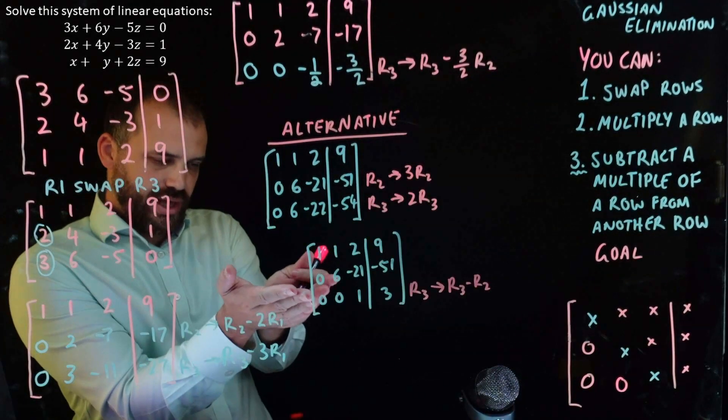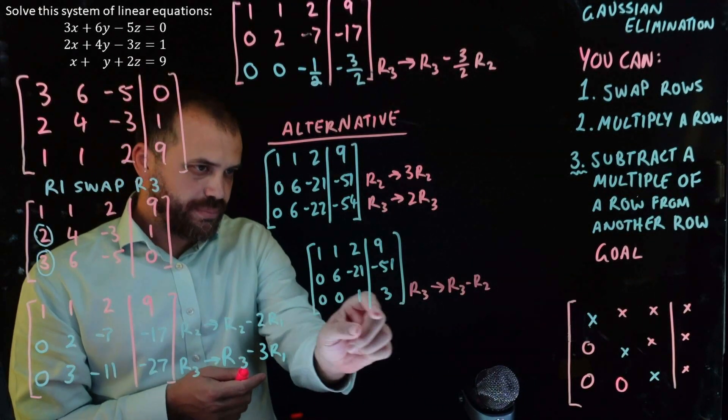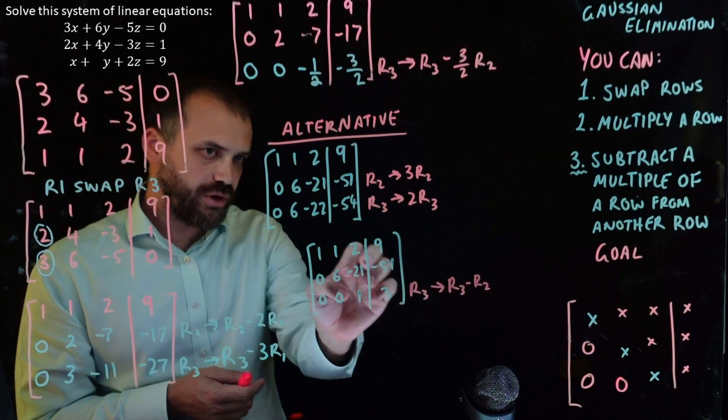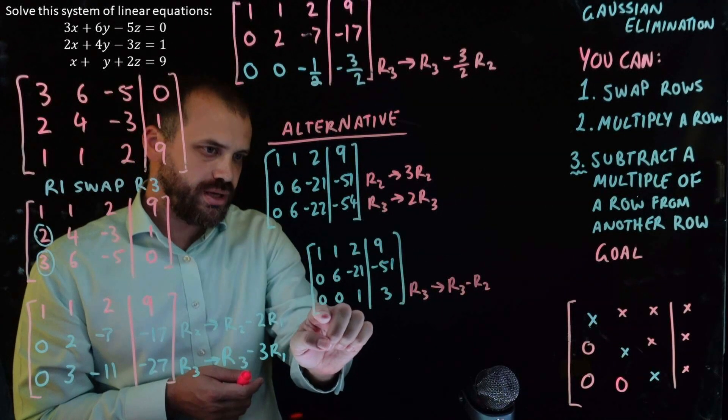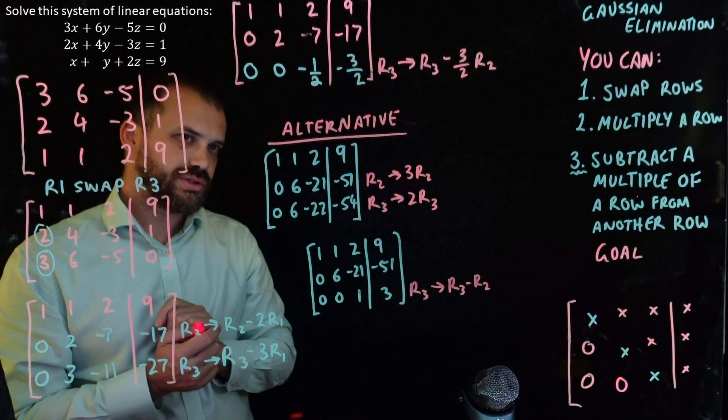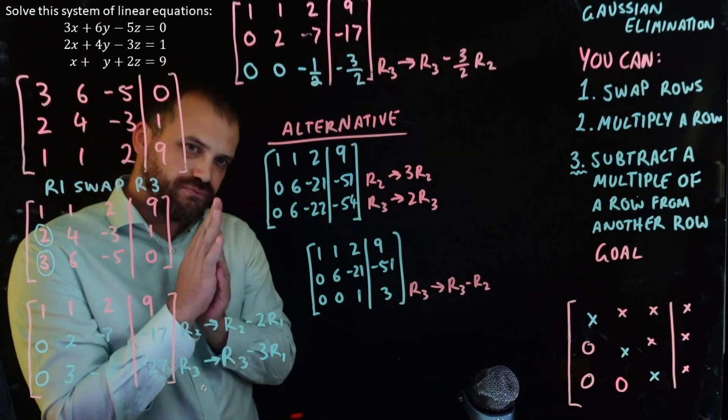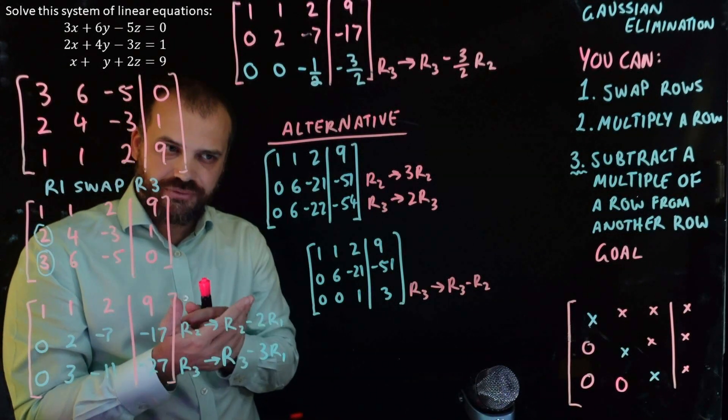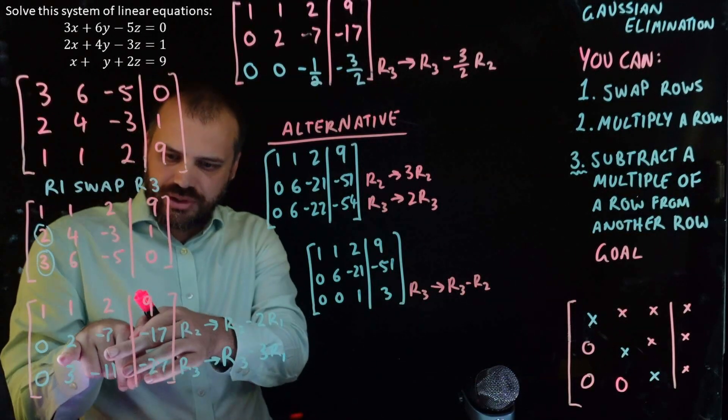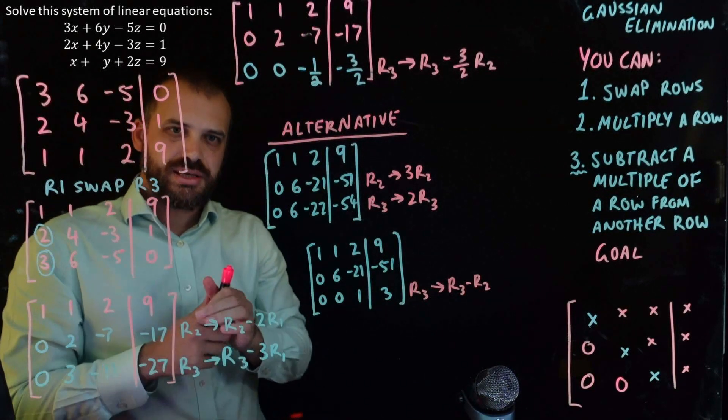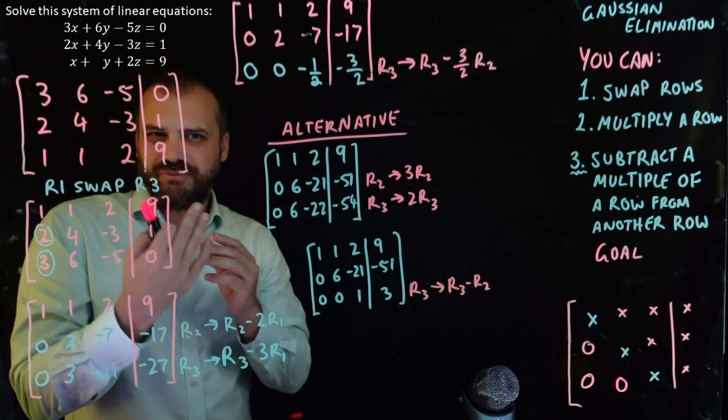And then you can subtract row 2 from row 3 to get rid of this value here. Okay, like that. So, what's happened here is we've subtracted row 2 from row 3 and we get something that looks like that. Now, this alternative is a little nicer because we avoided some fractional stuff.